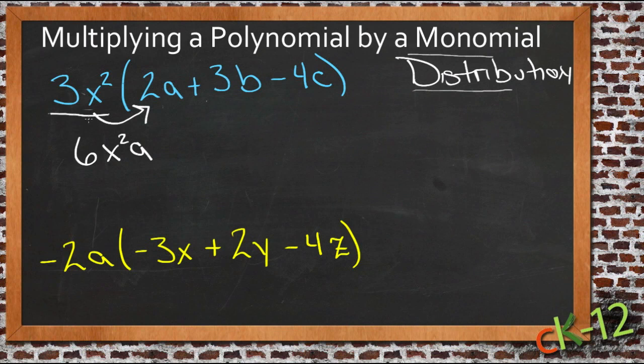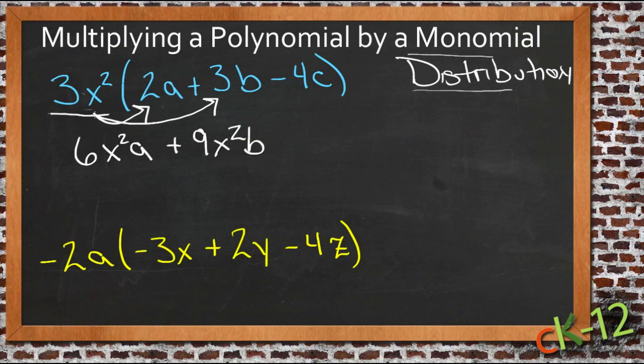So then we're done with that one. We move on to the next one, 3x squared times 3b. 3 times 3, they're both positive, so we get a positive 9. And x squared times b is just x squared b and that takes care of that one.